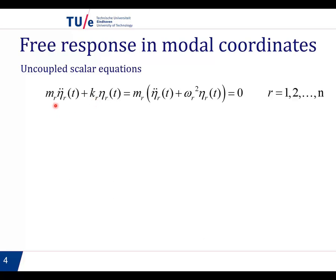We get n equations of one degree of freedom. So mass times acceleration plus stiffness times displacement is zero. And if we take the mass out, and remember that kr divided by mr is omega r squared, we end up getting here eta double dot r plus omega squared times eta. That should be zero. So this is the equation we need to solve. All of you can solve this equation by hand. You know the solution.